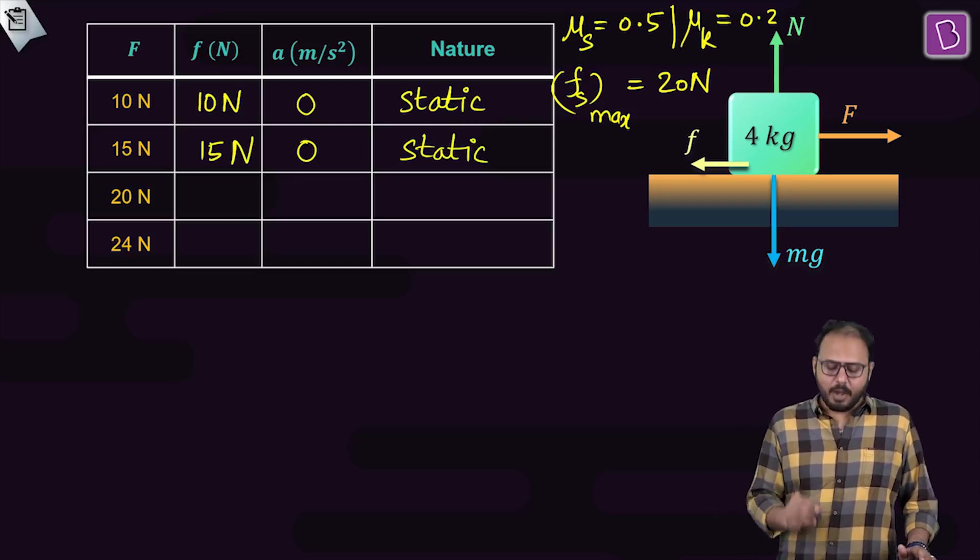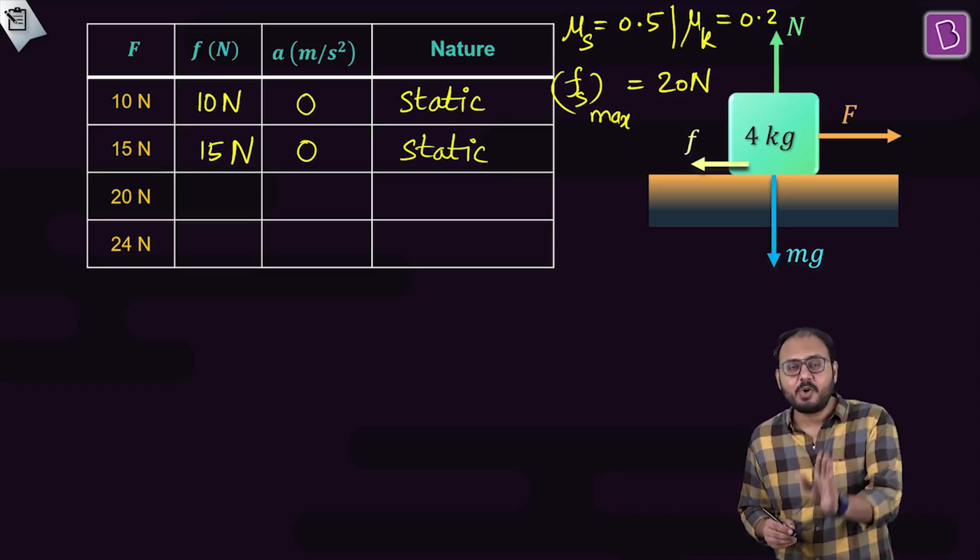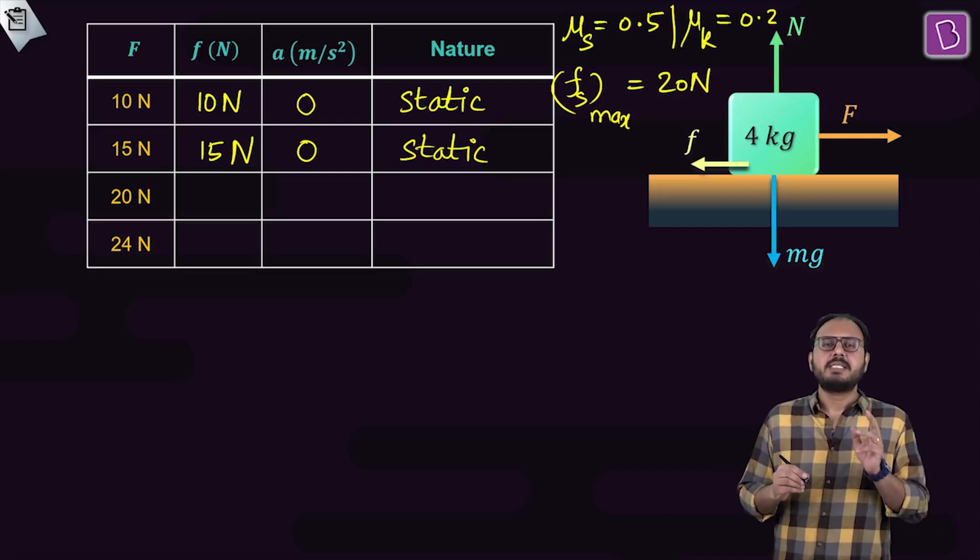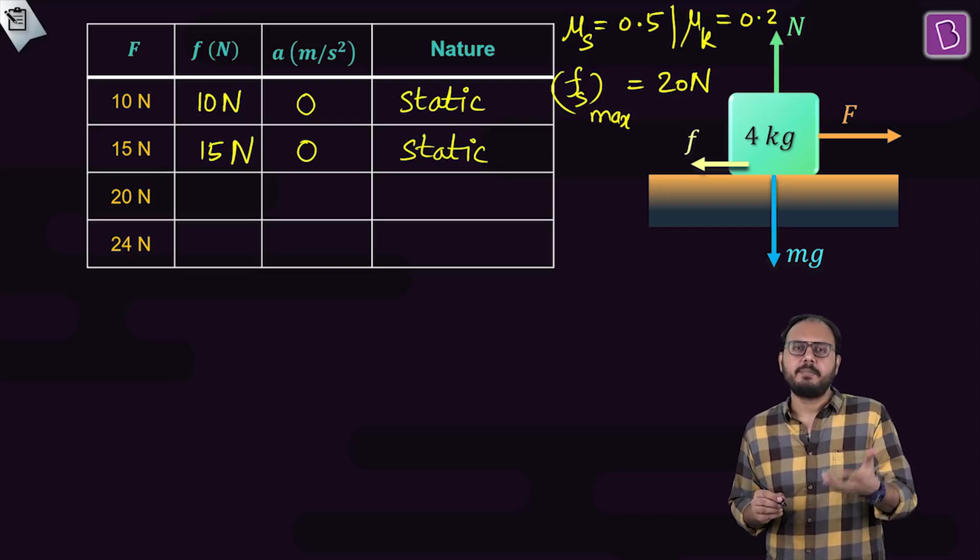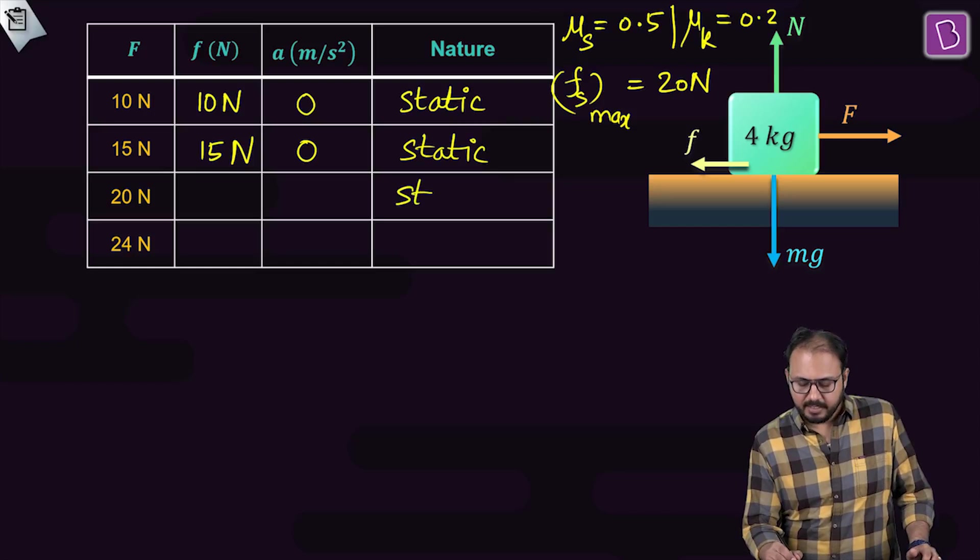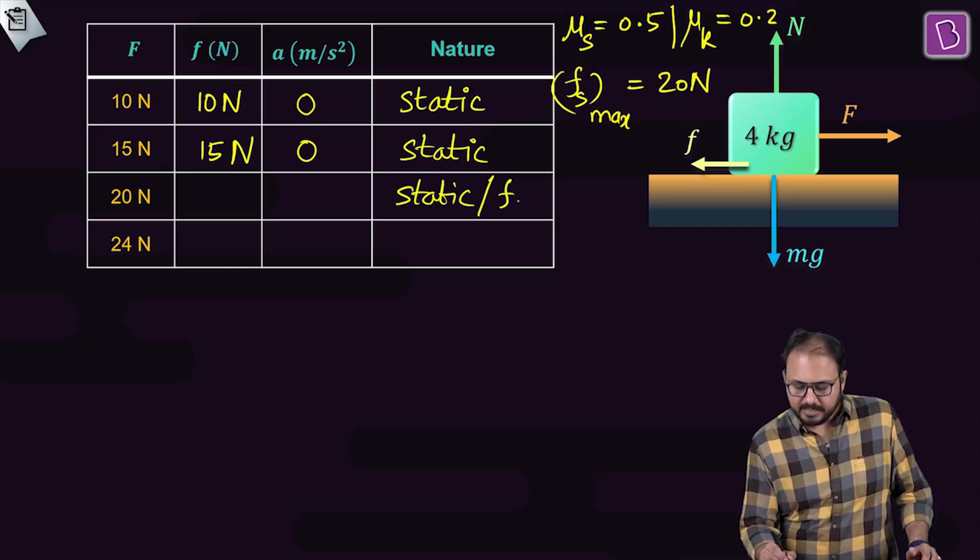I am now at 20. Guys, 20 is still less than equal to fs max. You are still at the limiting friction. So I know slipping has just started, but it is still the boundary case. In fact, it is static, but you can call that this is the case of limiting friction.